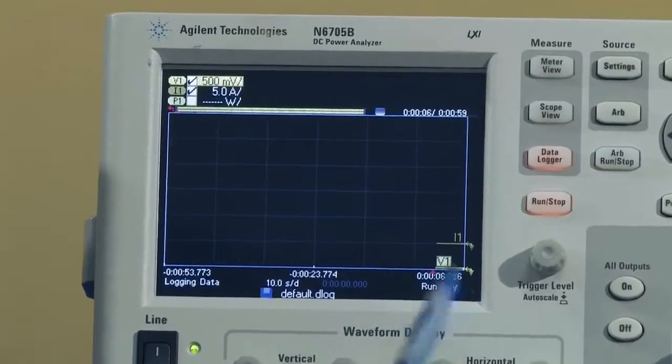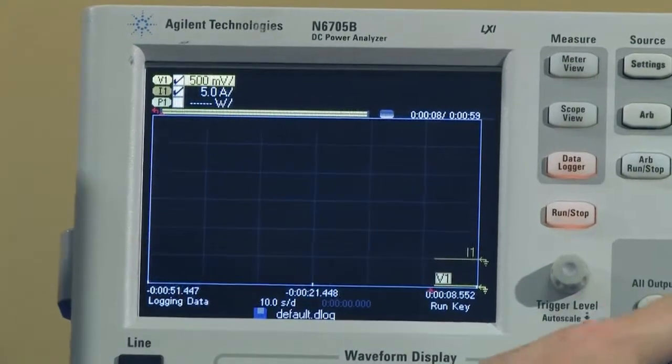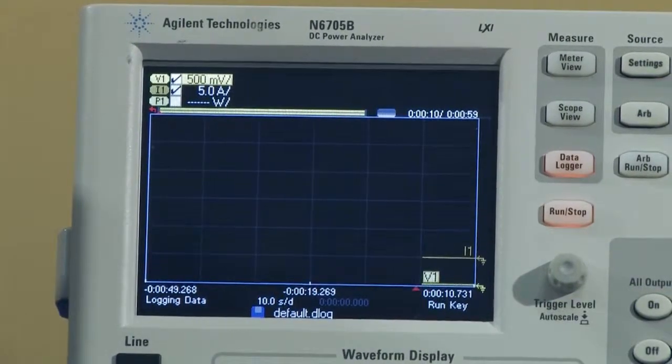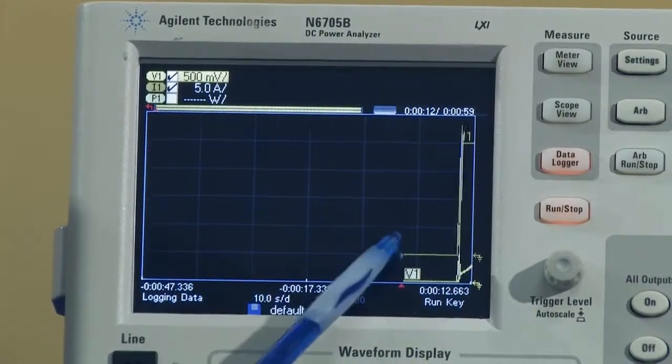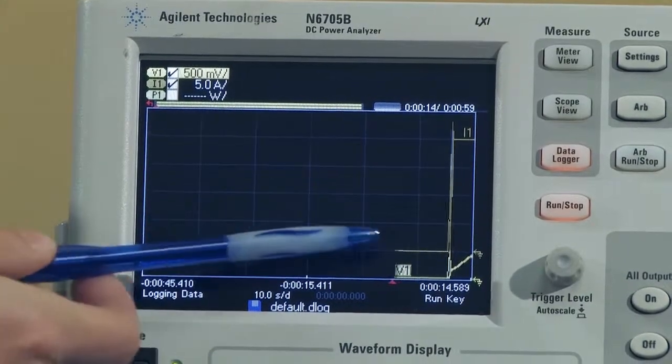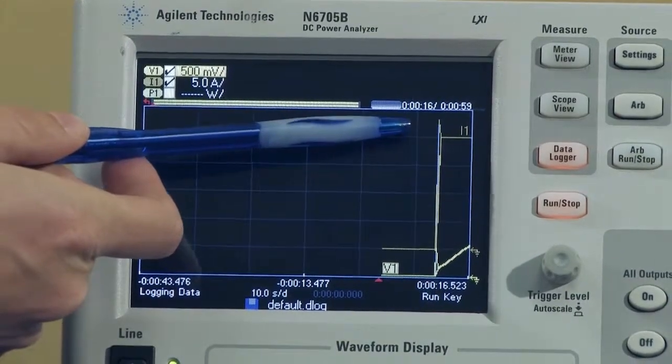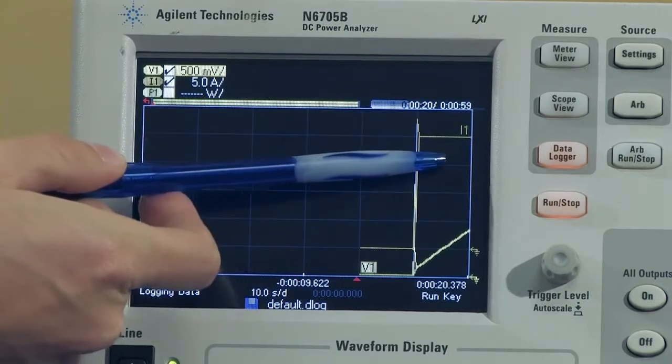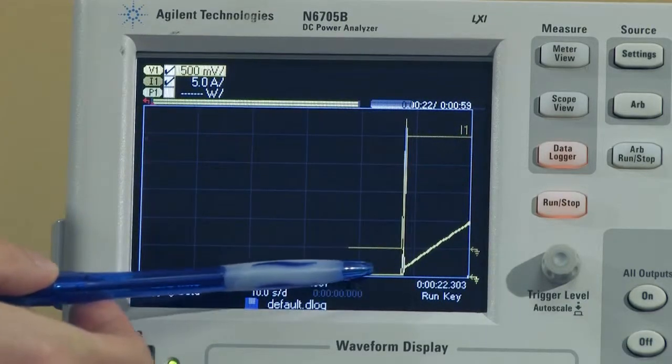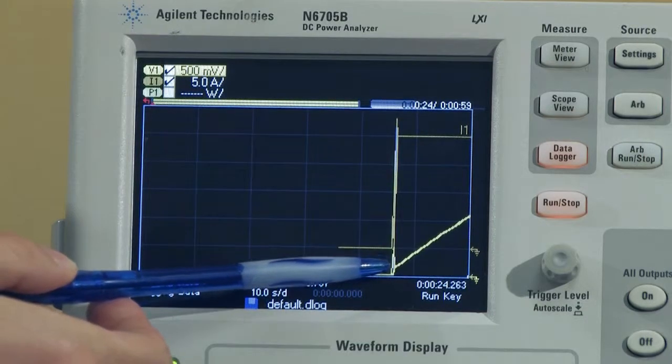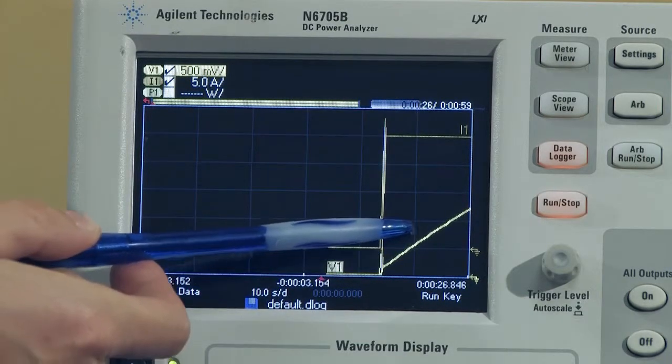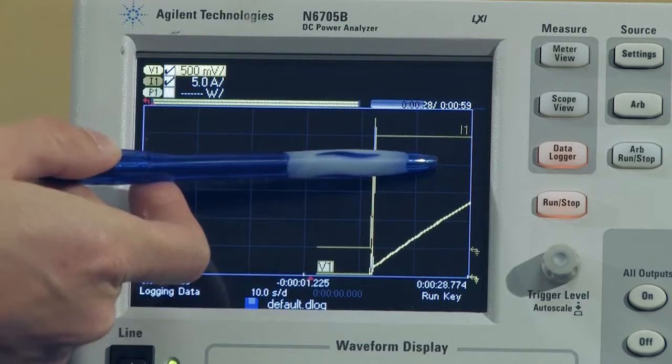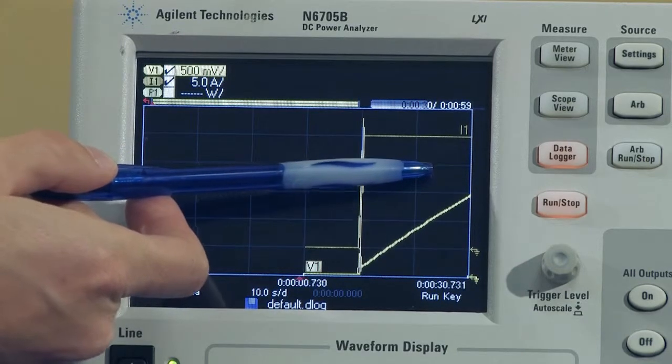Nothing's happening because the output is off. So if I turn the output on, we'll see the current, which is the top waveform, jumped up to 20 amps, and now the capacitor is being charged with that 20 amps of current. And you can also see the bottom waveform here is the voltage. The voltage is slowly being raised up to two and a half volts as the capacitor is charged.